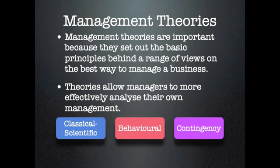For the next few lessons we're going to be looking at the different management theories that managers might employ in their business. These are important because they set out the ways that people think the best way to manage a business is, and it allows managers to effectively analyze their approach. We're going to look at three in particular: classical scientific, sometimes just called scientific, behavioral, and the contingency theory of management.